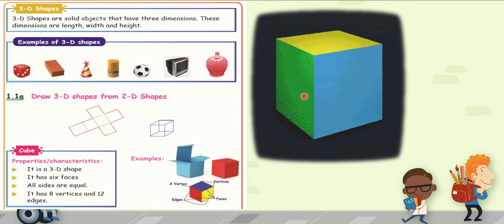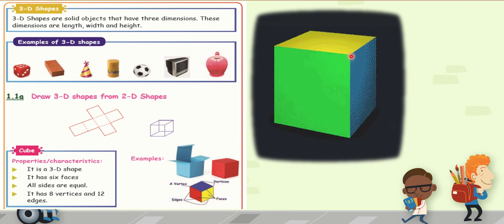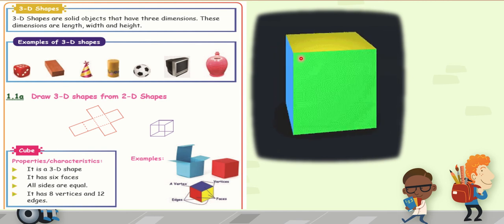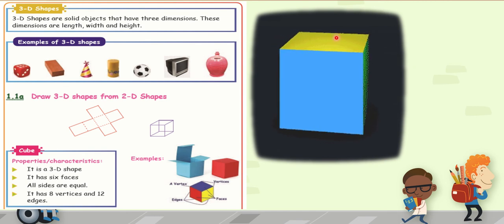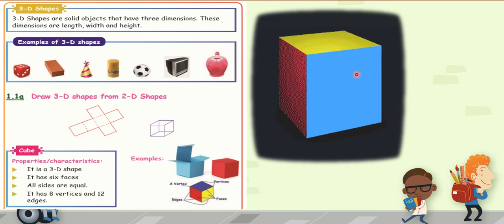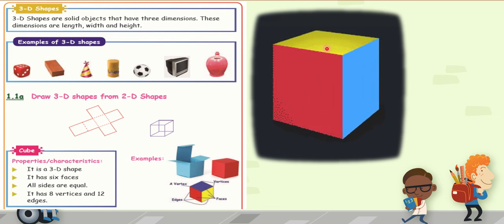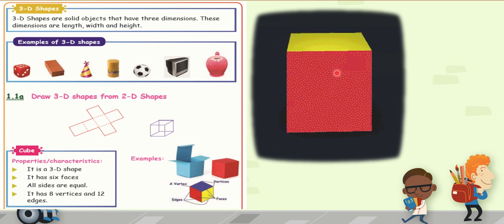12 edges having, 6 faces having. Then what is the specialty of cube? All the sides are equal. This cube has all the sides are equal. Cube understood?